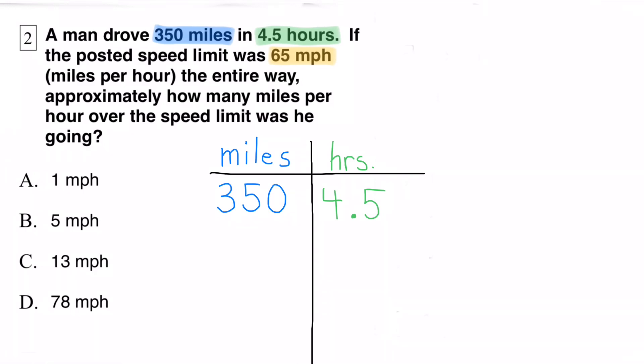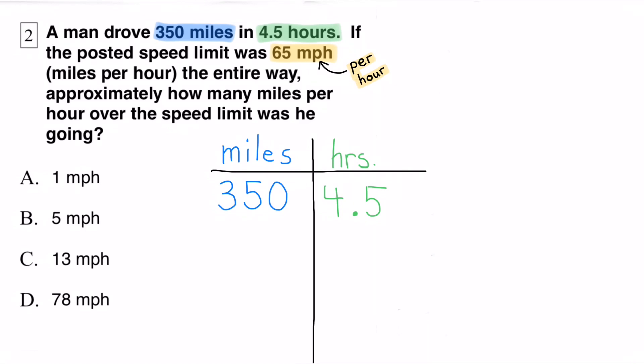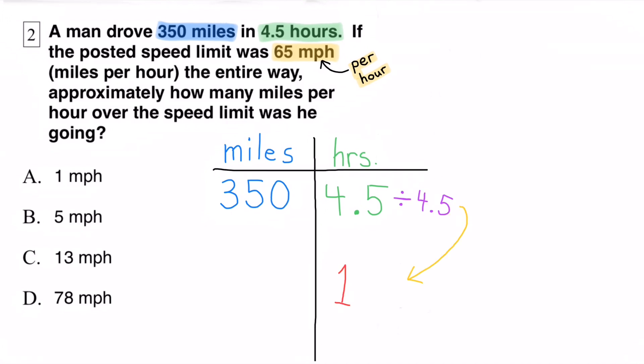The posted speed limit was 65 miles per hour. That means for each hour, the speed limit would be 65 miles, or traveling 65 miles in only one hour. So we need to figure out how far he traveled in just one hour.